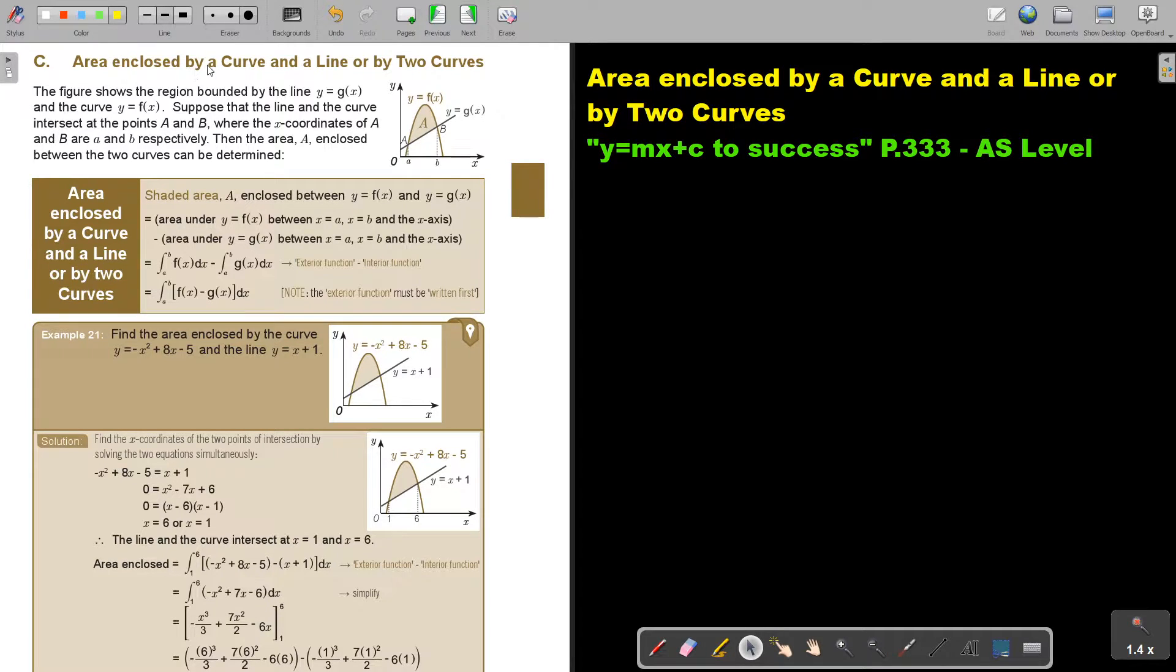Area enclosed by a curve and a line or by two curves. So this is the curve, this is the line. The figure shows the region bounded by the line Y equals GX and the curve Y equals FX. Suppose that the line and the curve intersect at the points A and B where the X coordinates of A and B are A and B respectively, small letters. Then the area A enclosed between the two curves can be determined and here's how you do that.